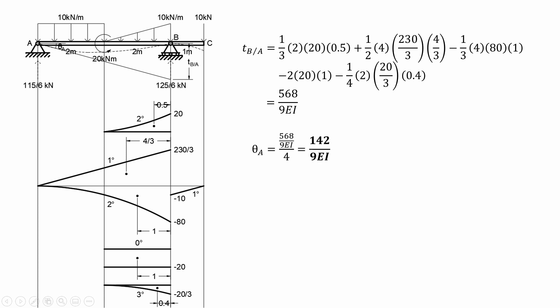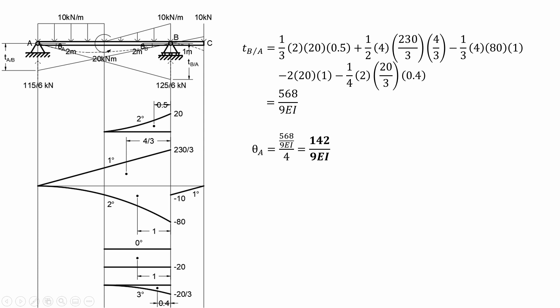To solve for the rotation at B, we must first solve for the tangential deviation of B to A, or TAB. To solve for TAB, we will just replace the distance of the center of the moment diagram by parts from B to A in the previous equation.